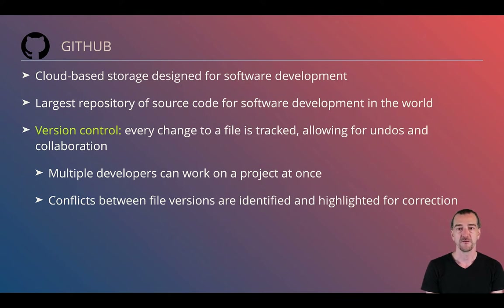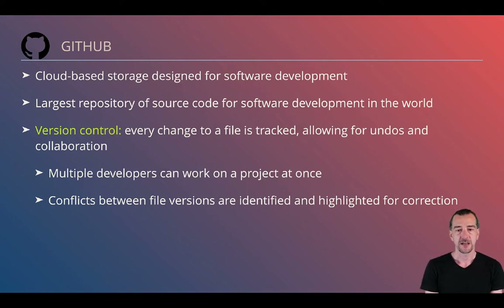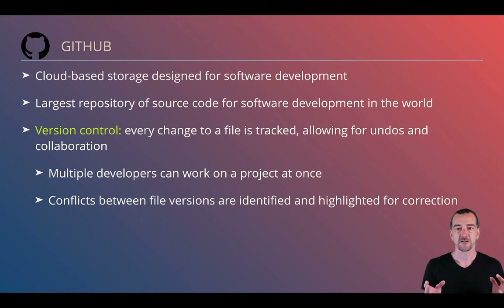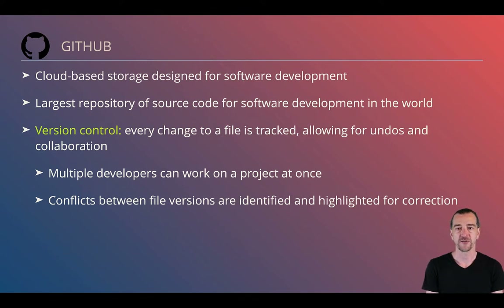GitHub is the largest repository of software in the world. It's got literally gazillions of different projects on it, and its strong feature is that it allows version control. This means that it tracks changes to files and allows you to go back in time and review what changes were made and when. Multiple people can work on a project at once and modify files — even the same file — and GitHub will track what changes were made by whom, and if there are conflicts it'll help you resolve those by showing where they exist and allowing developers to reconcile them.